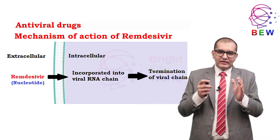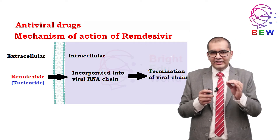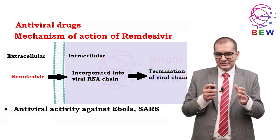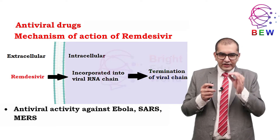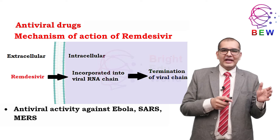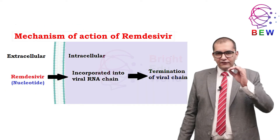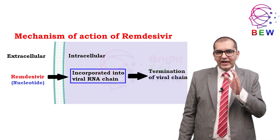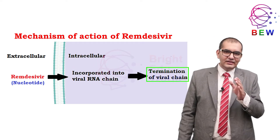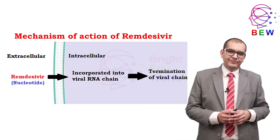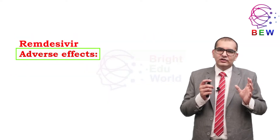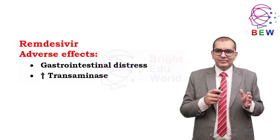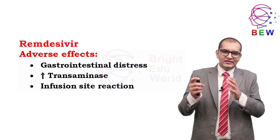Remdesivir is an experimental drug that has demonstrated antiviral activity against several RNA viruses, such as Ebola, SARS, and MERS, both in vitro and in some non-human primate studies. Its mechanism of action involves incorporation into the viral RNA chain causing premature chain termination. Important adverse effects include gastrointestinal distress, elevated transaminase, and infusion site reactions.